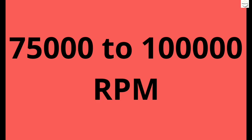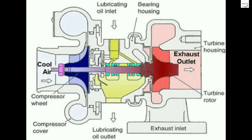In operation, the turbocharger can reach speeds of up to 1,000,000 RPM. Because of these extreme speeds, the turbocharger requires lubrication. The main oil gallery supplies oil to lubricate the turbocharger's bearings and shaft.